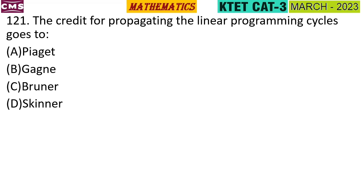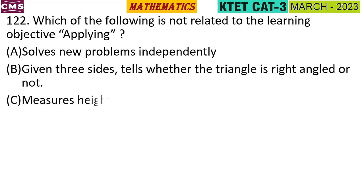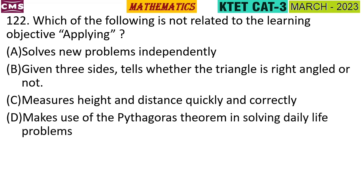Question 2: Which of the following is not related to the learning objective 'applying'? The options are: solves new problems independently; given three sides, tells whether a triangle is right-angled or not; measures height and distance quickly and correctly; make use of the Pythagoras theorem in solving daily life problems. The answer is: measures height and distance quickly and correctly.